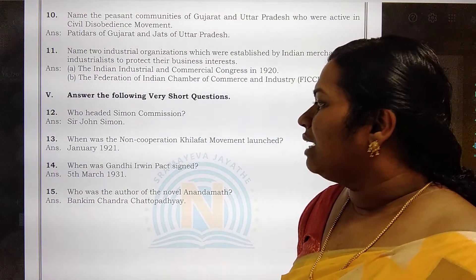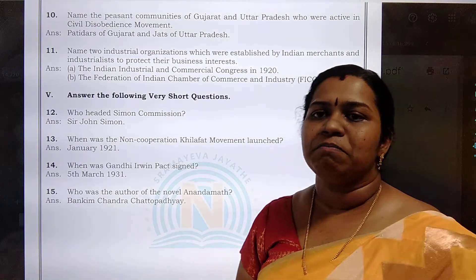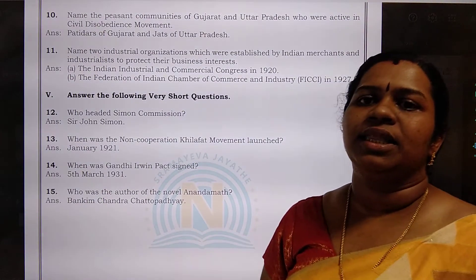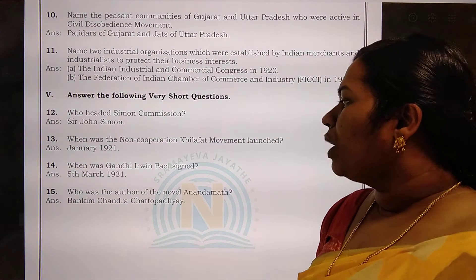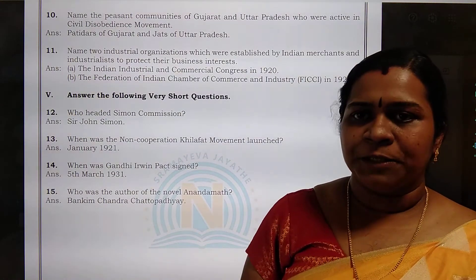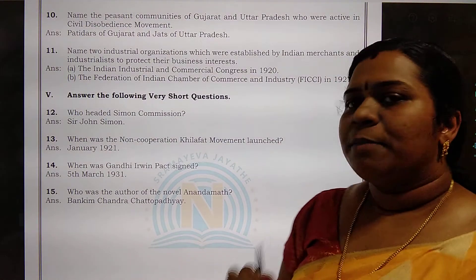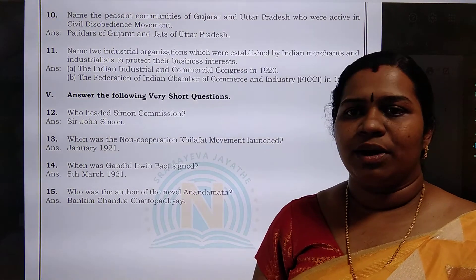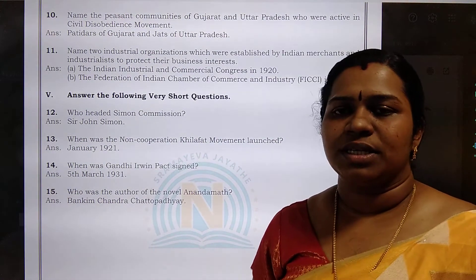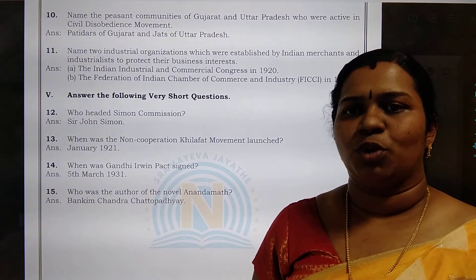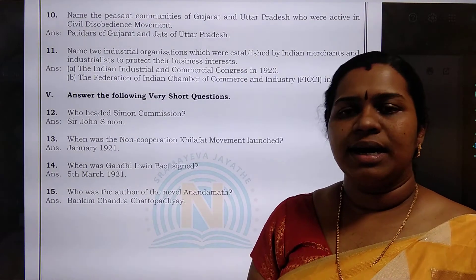When was the Gandhi-Irwin Pact signed? The Gandhi-Irwin Pact was signed on 5th March 1931. Who was the author of the novel Anandamath? The novel Anandamath was written by Bankim Chandra Chattopadhyaya, also known as Bankim Chandra Chatterjee.